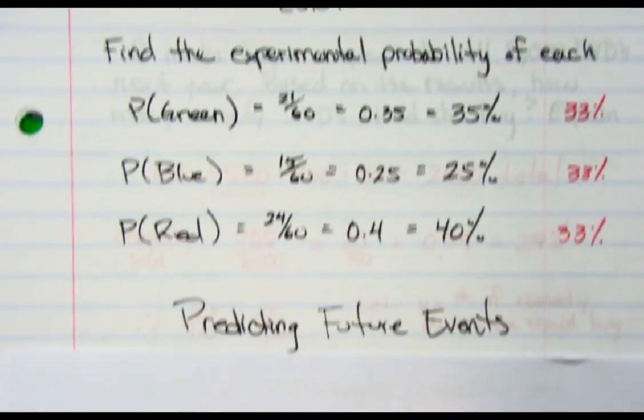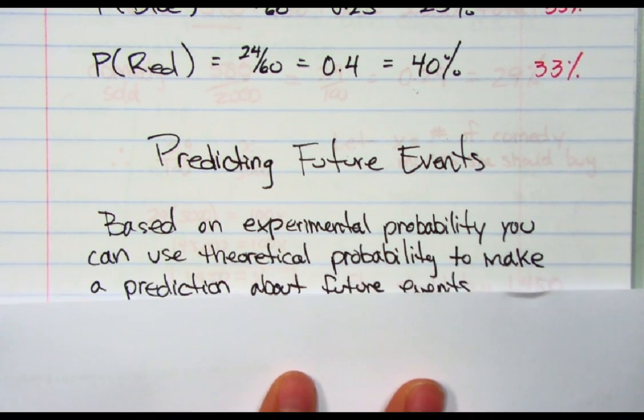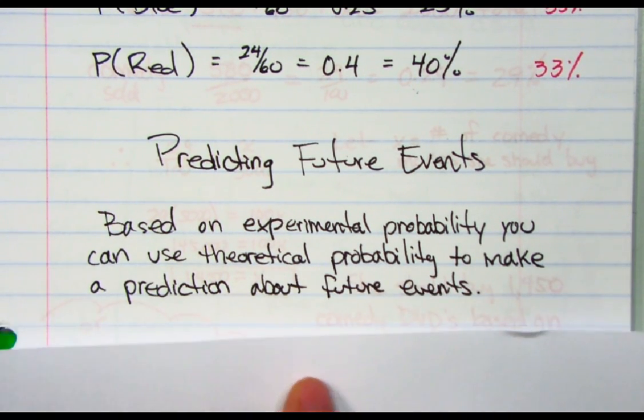Now, why is this important? We want to predict future events. Based on experimental probability, you can use theoretical probability to make a prediction about future events. That's why it's important to know these things.